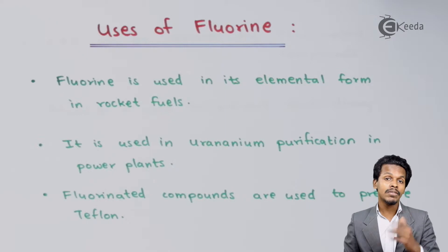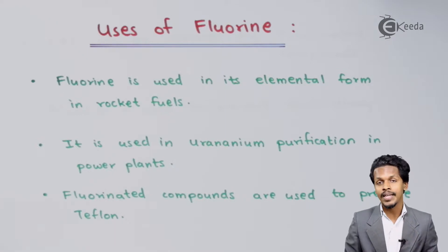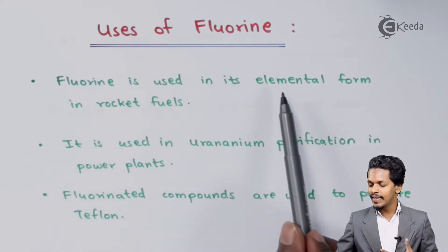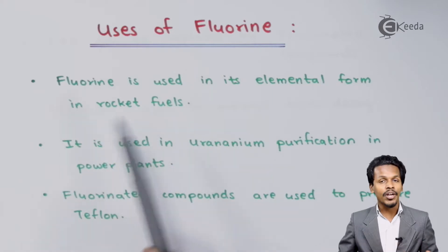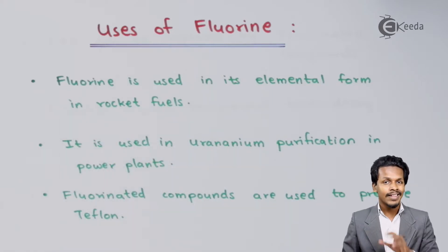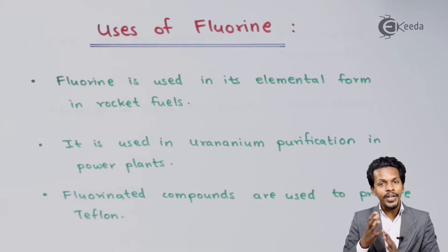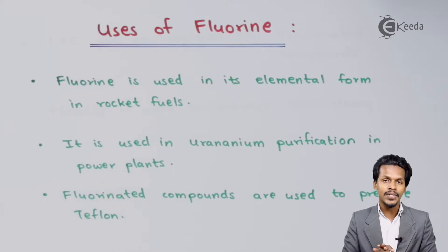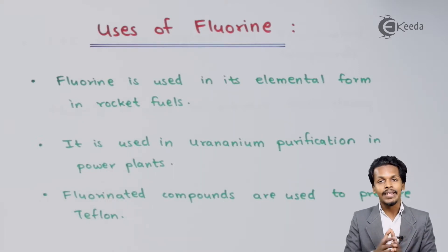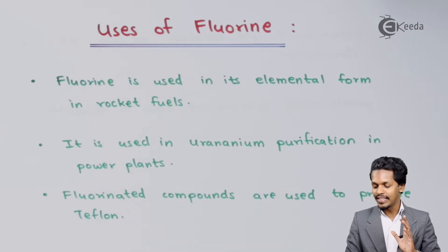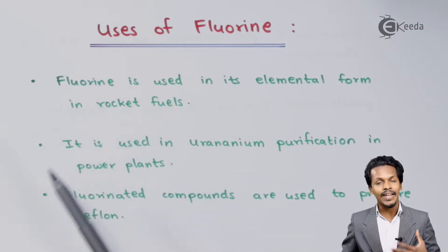Starting with the first point: fluorine is used in its elementary form in rocket fuels. Just as we use oxygen as a fuel, fluorine can also be used in rocket fuels as a source to provide a particular energy, and that is how it is used in rocket fuels.